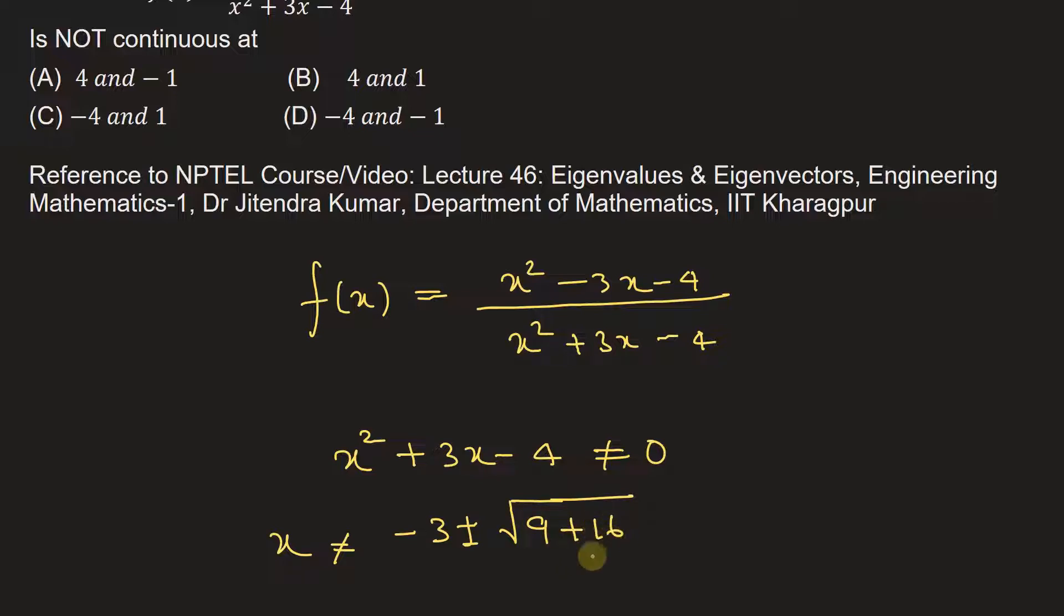So this will be 16 whole divided by 2. So from here we get minus 3 plus or minus 5 by 2. This will be equal to minus 4 and 1.